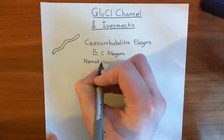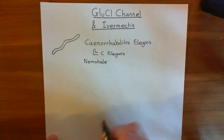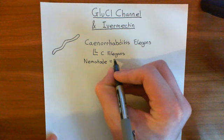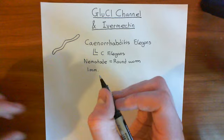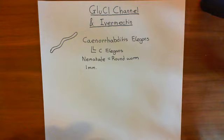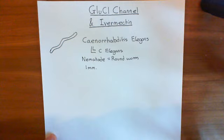Other types of worms, such as trematodes and cestodes, are both flat worms, whereas C. elegans is a round worm. These little organisms are usually around one millimetre in length. The GluCL channel, a type of cis-loop ligand-gated ion channel, was initially found in C. elegans but has since been found in other worms and also arthropods such as head lice.